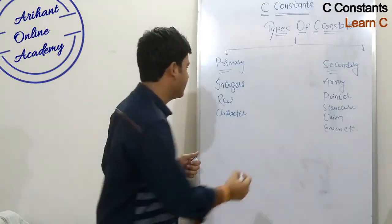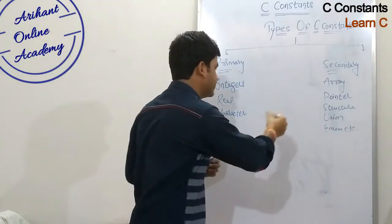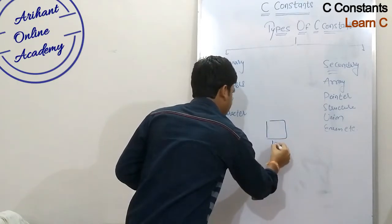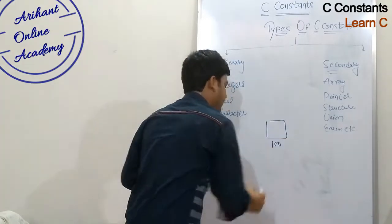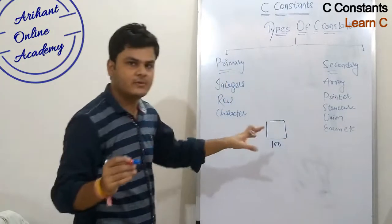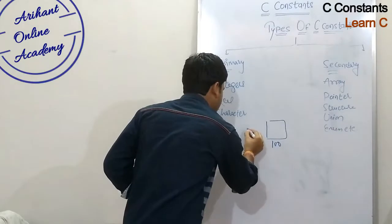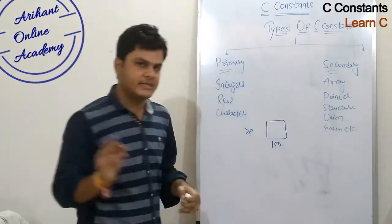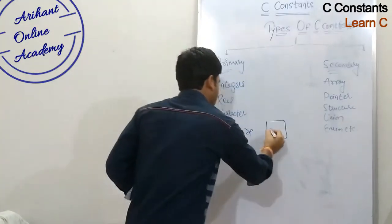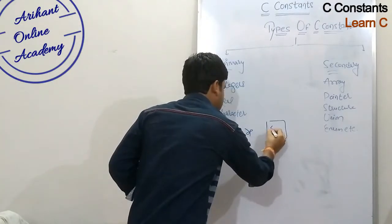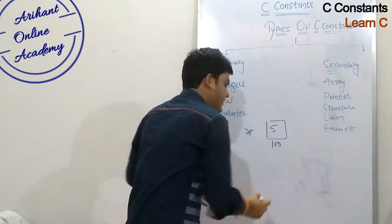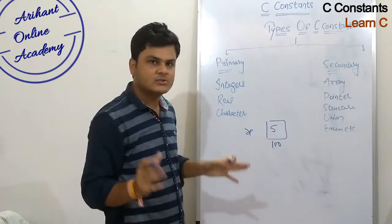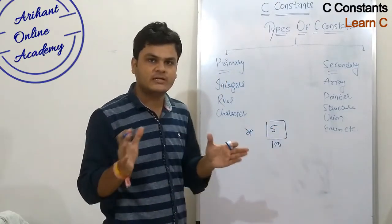Like, suppose a memory location is allocated to x. Suppose the memory address is 100 and the name of this memory location is x. Suppose the value of this is 5 — then if it's not changing in the full program, it doesn't change. Constants don't change.